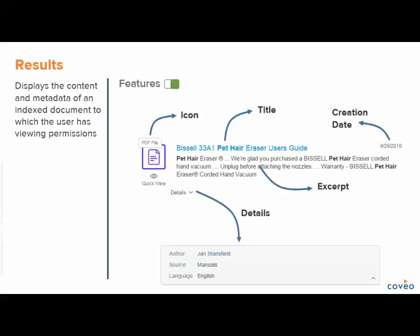Nonetheless, some information remains standard, such as providing an icon for quick identification of result type, the date of creation, and an excerpt of sentences in which the matching terms are highlighted. Additional details will be visible by selecting the down arrow, providing more information about the specific result, like language or the author.